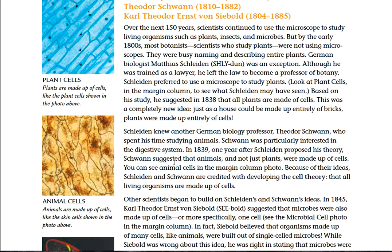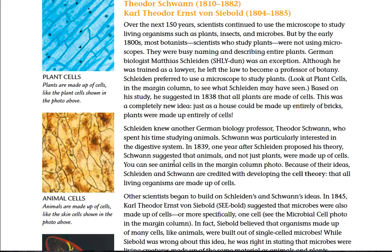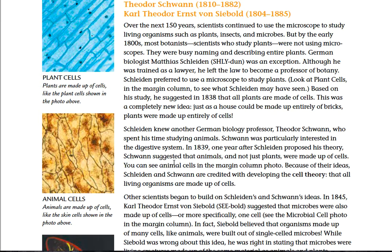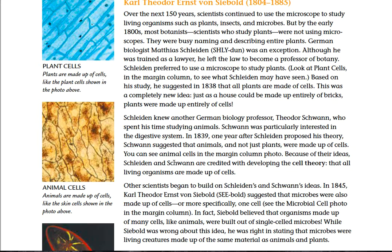Schleiden knew another German biology professor, Theodor Schwann, who spent his time studying animals. Schwann was particularly interested in the digestive system. In 1839, one year after Schleiden proposed his theory, Schwann suggested that animals — not just plants — were made of cells. Because of their ideas, Schleiden and Schwann are credited with developing the cell theory: that all living organisms are made of cells. In 1845, Carl Theodor Ernst von Siebold suggested that microbes were also made up of cells — or more specifically, one cell.